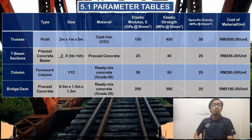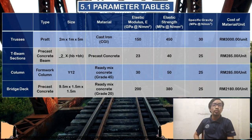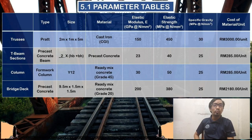Parameter Table. We have 4 sections: trusses, beam, column, and bridge deck. For trusses, we use right type, size 2x1 meter by 5 meter, material is cast iron. For the beam, we use type pre-cast concrete, formula as shown on screen, material is pre-cast concrete. For column, we use hollow column type, size Y12, material is ready mix concrete grade 45. For bridge deck, we use pre-cast concrete type, size 9.5 x 1.5 x 1.5, material ready mix concrete grade 20. The table also shows values for elastic modulus, elastic strength, specific gravity, and cost of material.